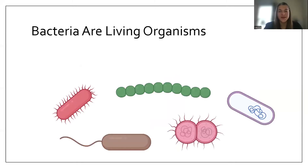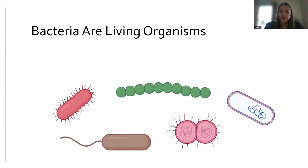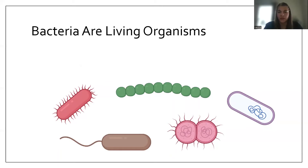Bacteria, just like us, are living organisms and they're super diverse and come in many different forms. Klebsiella is shaped like a cylinder, shown here on the right as that purple bacterium. Other bacteria, for example, can form long chains that almost look like peas in a pod, like the green bacteria in the middle. There's some bacteria that can move — the brown bacteria at the bottom actually have a tail that allows them to swim through different environments.